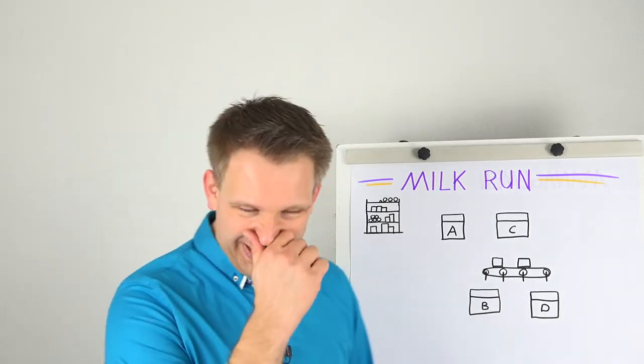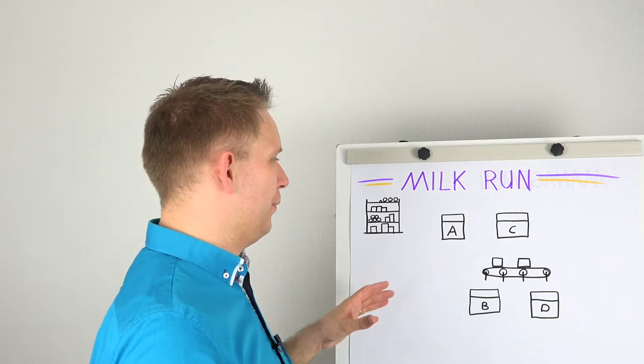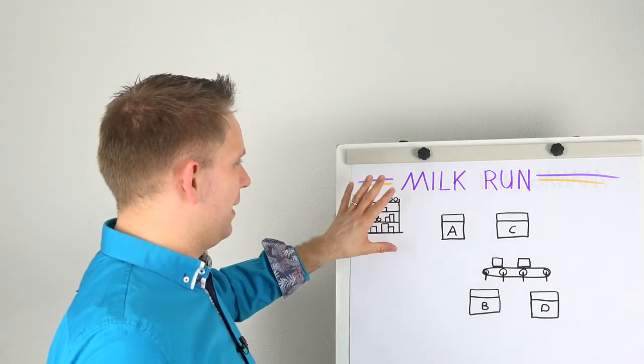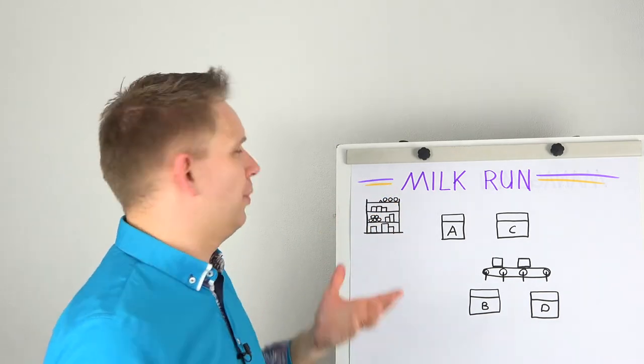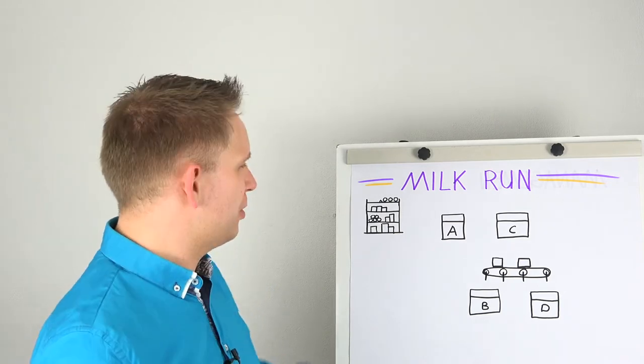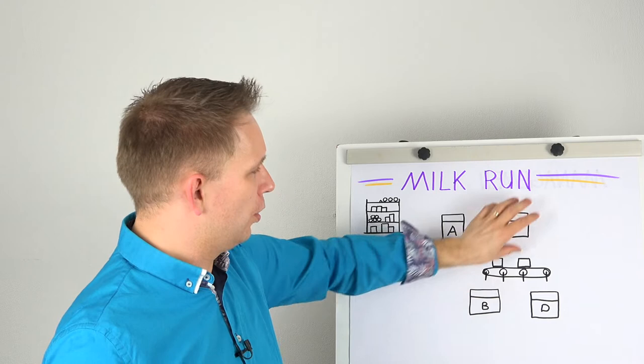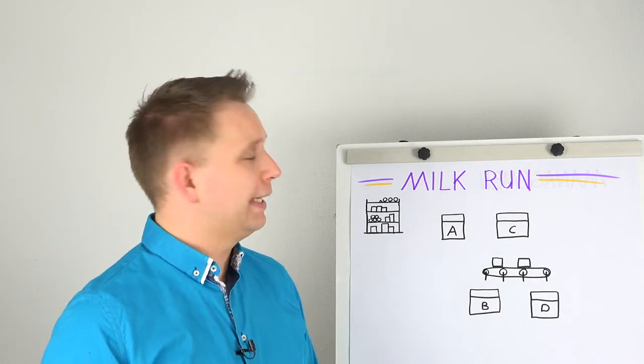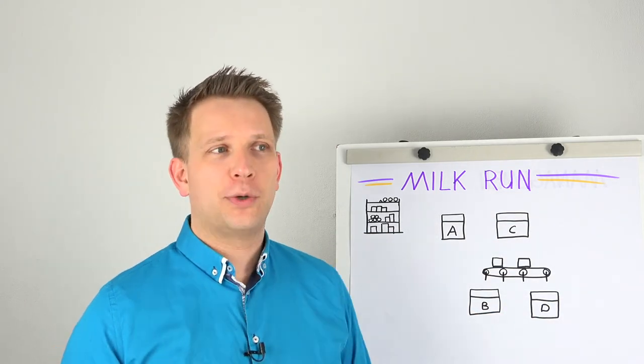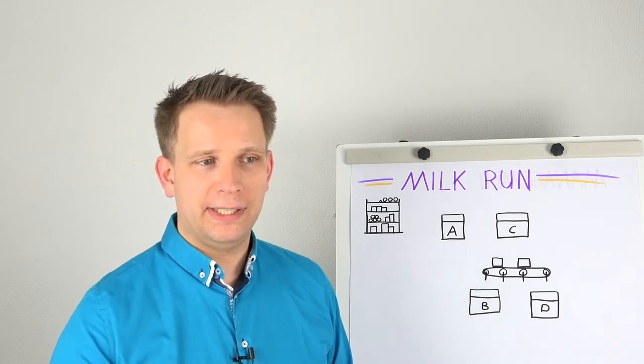To start with, what is this milk run in the first place? Let's say that we have a small internal warehouse. Actually, it can be a very large warehouse, but this is our own internal warehouse. And then we have a whole set of operating stations throughout the factory and they require ingredients.